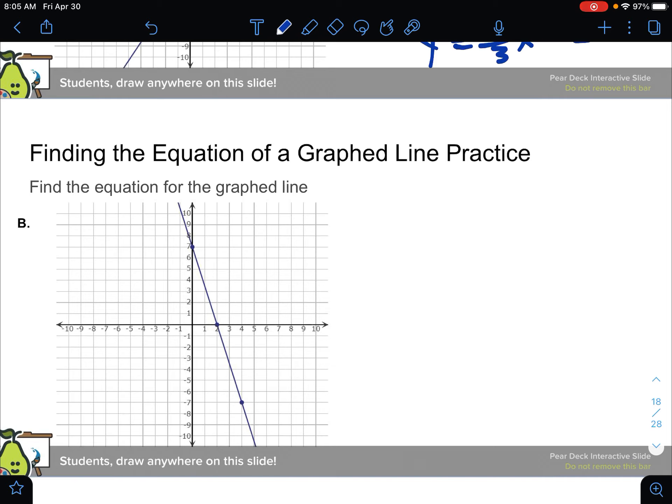For the next one, if I use the coordinate here and the coordinate here, that would be going down seven and right two. So slope would be negative seven over two would be your rise over the run, and the y-intercept is seven.